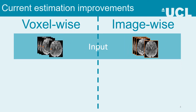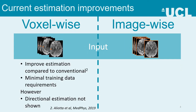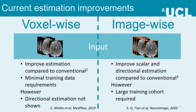Voxel-wise networks have been shown to outperform conventional fitting for scalar measures, but they have not been shown to estimate the directional measures required for tractography. Image-wise CNNs have been shown to estimate both the directional and scalar measures with higher accuracy than conventional fitting. However, the large training dataset required is not clinically feasible.